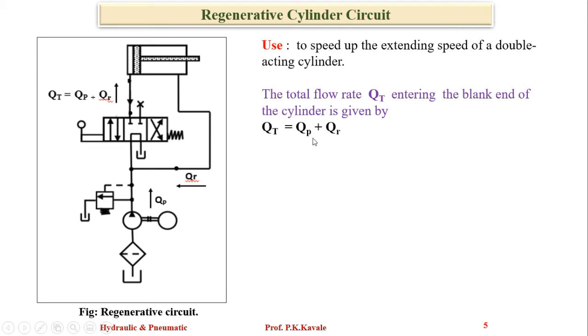So total flow is Qp plus Qr. We are interested in pump flow rate, which is Qt minus Qr. What is Qt? Total entering into the blank side. We apply the continuity equation: piston area...